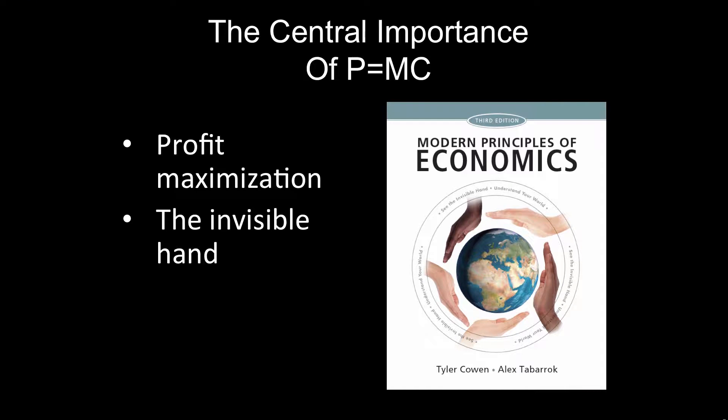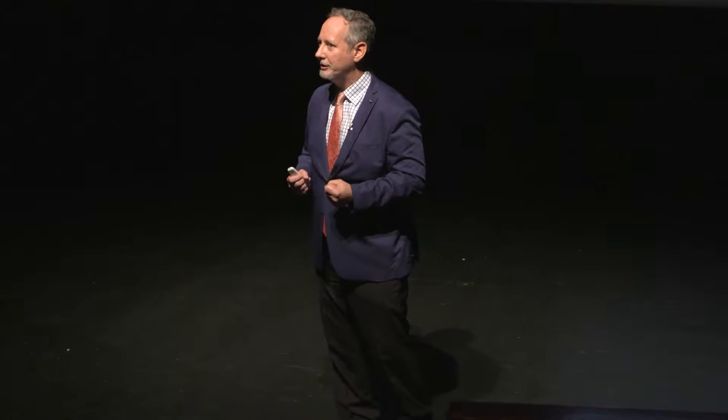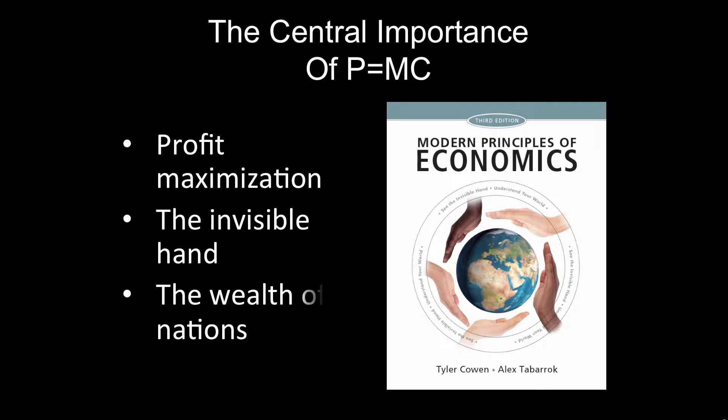I'll talk about that. It also turns out that P equals MC, or the failure of that condition to hold sometimes, is also key to understanding why some nations are rich and other nations are poor. So there are macroeconomic consequences to this, not just microeconomic consequences.